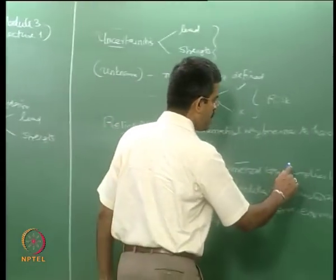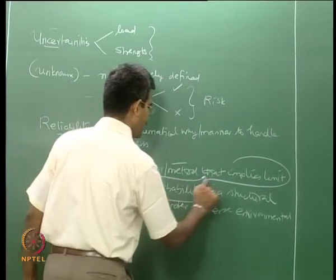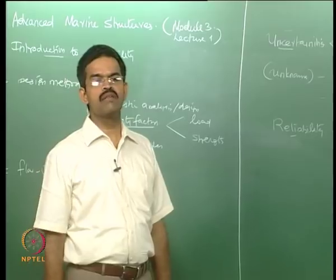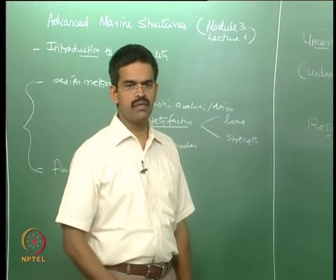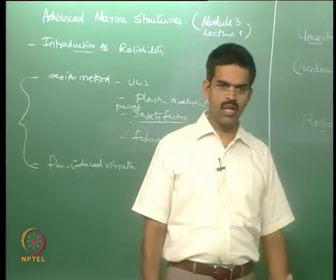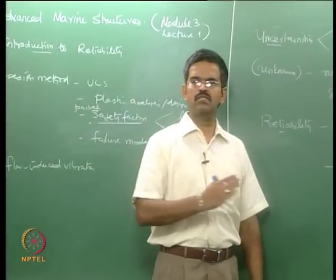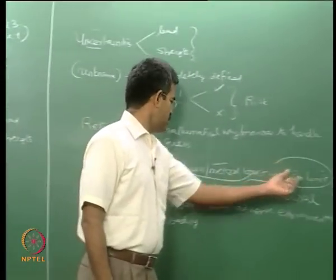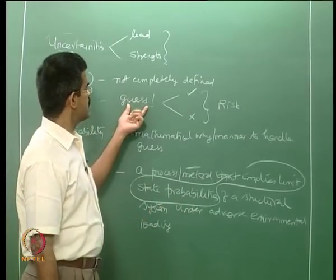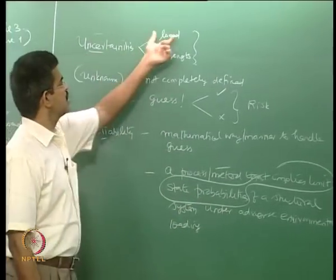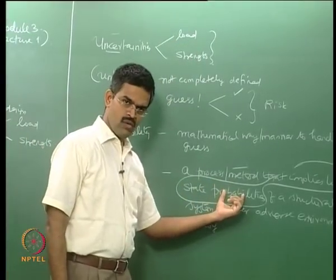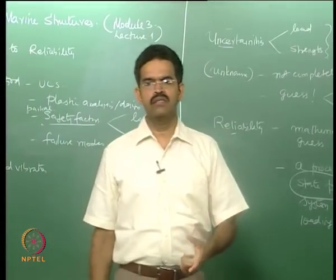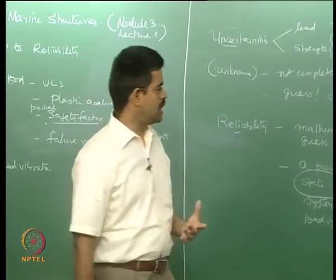This implies a limit state of probability. We already understand there are different limit states. One important limit state practiced in marine structure design is ultimate limit state, ULS, which we discussed in the first module. Limit state probabilities mean a guess on uncertain parameters is handled using some theory — there is a rational way of handling these uncertainties. That is why it says probability.